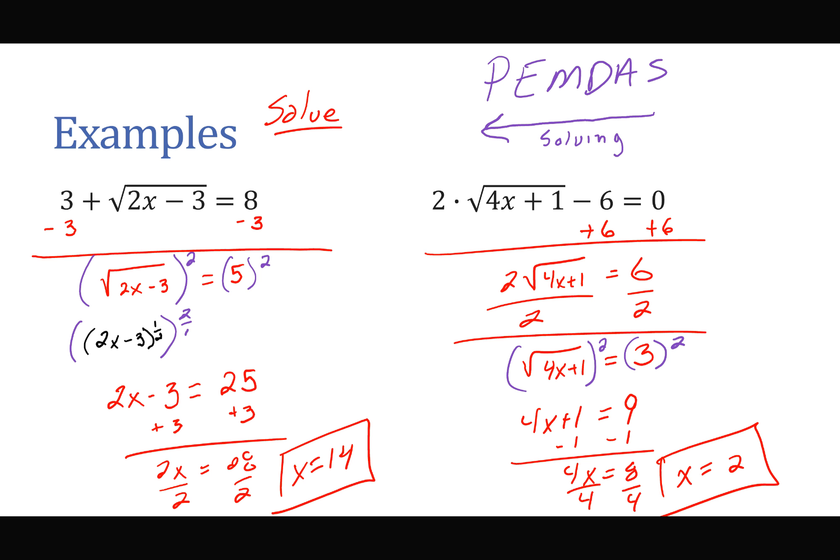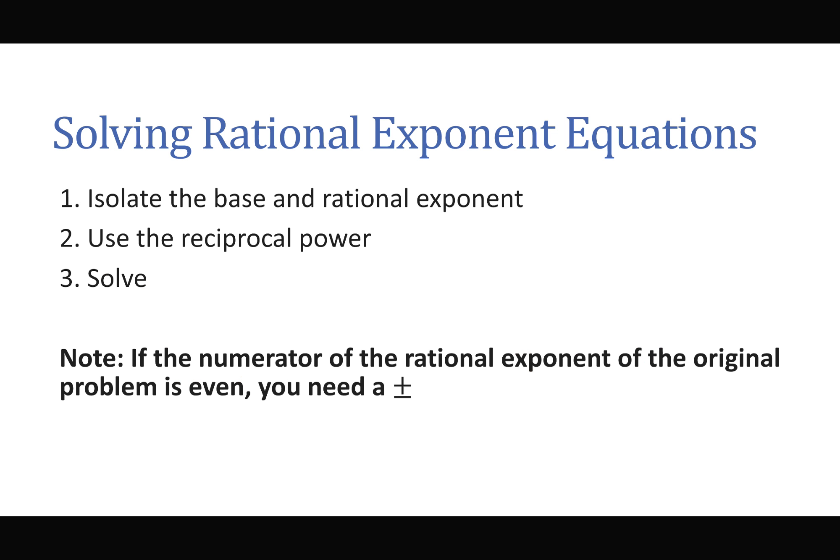But this PEMDAS in reverse is for solving. We go this direction when simplifying. So good old math. They try to make it confusing for you. But it is different. When we are simplifying, we actually tackle the parentheses, then the exponents, then the multiplication, division, addition, and subtraction. So simplify, we go PEMDAS in the correct order. After solving, we actually do it in the reverse order, because we're trying to undo what's happening.